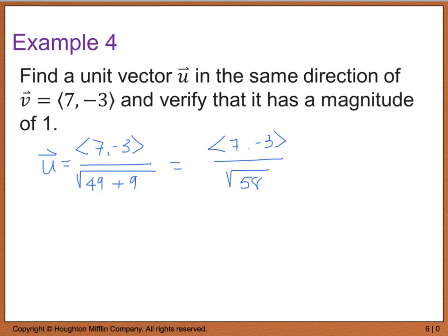Now, we can actually break this up, and we can write this as ⟨7/√58, -3/√58⟩. Oops, and that should be a pointed bracket.